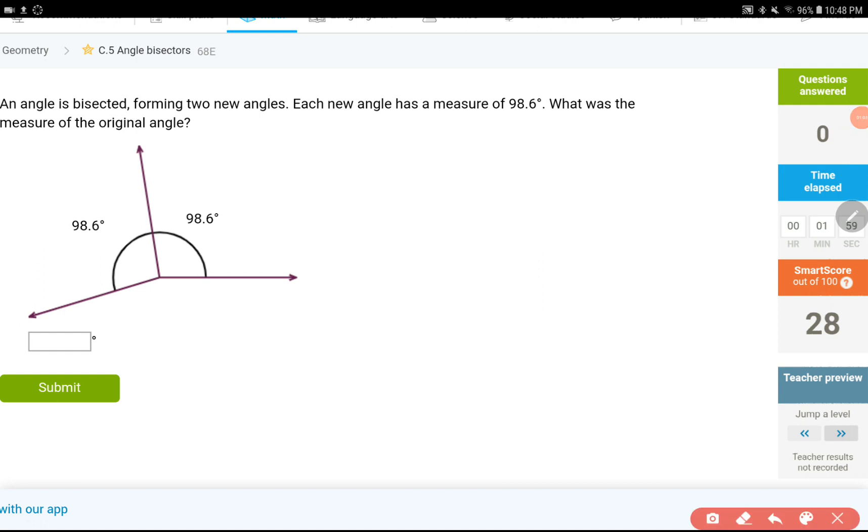Okay, here is the next level. Once you hit kind of 28, 30 points, you're going to see a similar question like this. An angle is bisected, forming two new angles. Those two new angles are 98.6 and 98.6. What was the measure of the original angle?